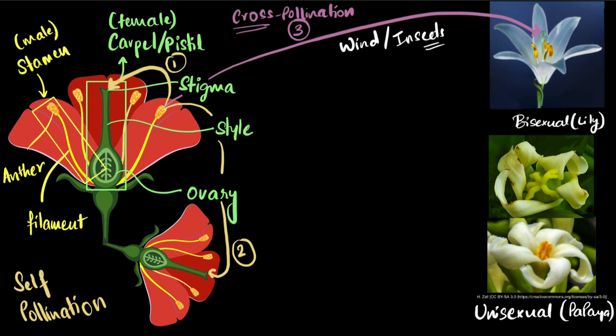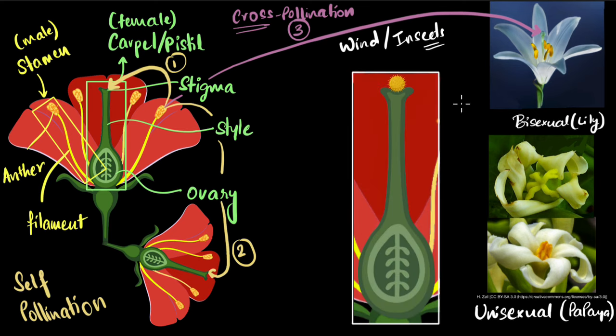But what happens next? For that, let's zoom in. We have the pollen grain sitting on the stigma. That's pollination. And we have the sperm cells inside the pollen grain. And we have the egg cells inside the ovary over here. How does this reach over here?